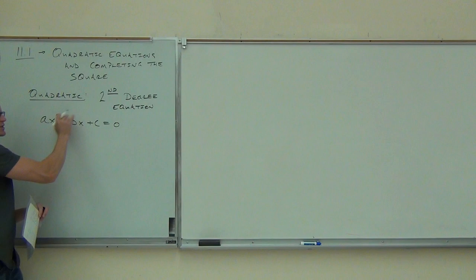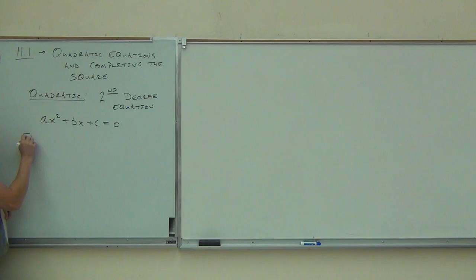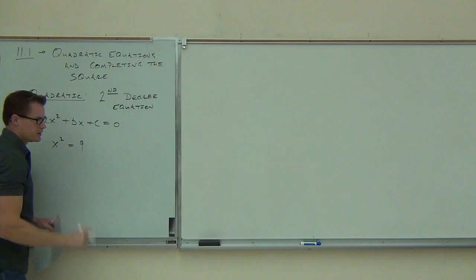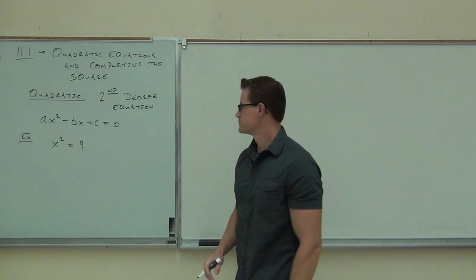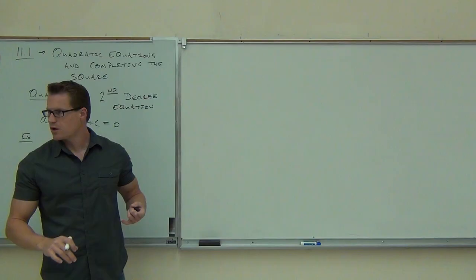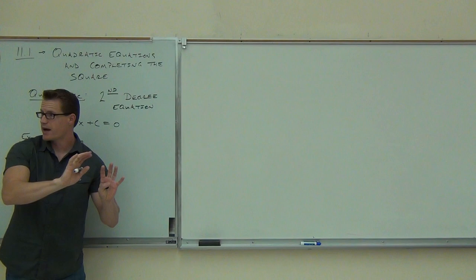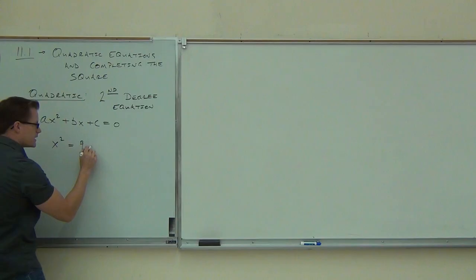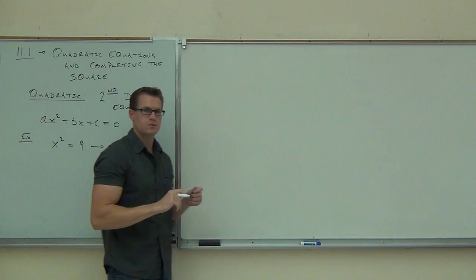We're not going to worry about equations with that middle term right now — we're going to build up to that. First I want to look at a simple example: x squared equals 9. I'm going to show you two ways to solve this. One is the old way, one is going to be a new way. The old way: you realize there's an x squared, so you get everything to one side and zero to the other, then factor.